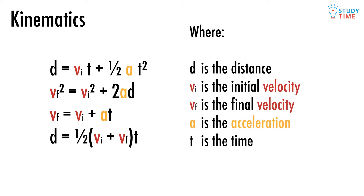Here, d is the distance the object is moved, vi is the initial velocity of the object, vf is the final velocity of the object, a is the acceleration of the object (which will be constant), and t is the travel time of the object. Basically, if you're asked any horrible-looking questions about objects in motion, you can look to these equations as your saving grace. Just pick the one that suits you best, input the numbers you're given, and see what pops out the other end.